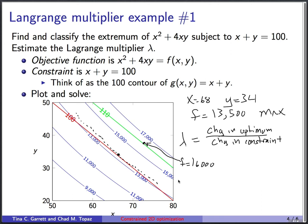So now we can estimate the Lagrange multiplier as the change in the optimum. So that's 16,000 minus 13,500 divided by the change in the constraint. The constraint started out at the 100 contour. And then we went up to the 110 contour. So this gives us a value of 2,500 over 10, which is 250. That's our estimate for the Lagrange multiplier.